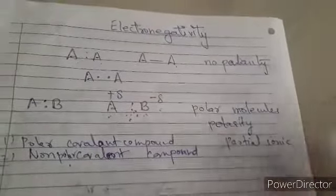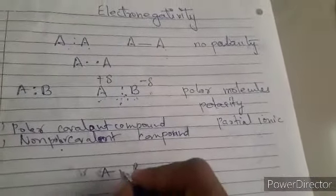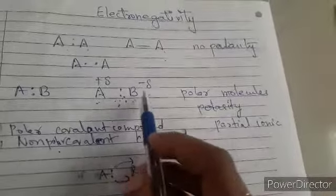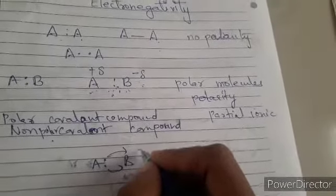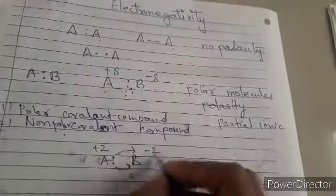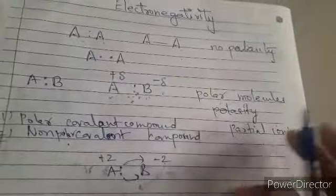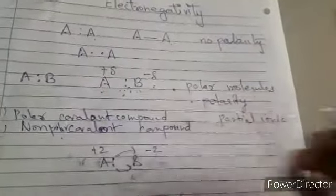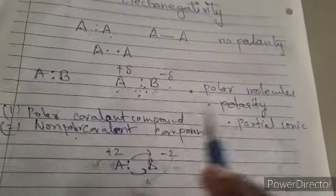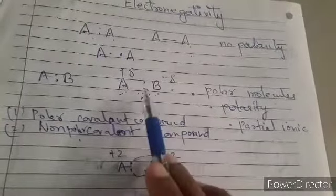Just like in a purely ionic compound the electrons would fully transfer, in polar covalent compounds partial charges are generated. So in polar molecules there is a partial negative charge and a partial positive charge developed, and they show partial ionic character in nature.